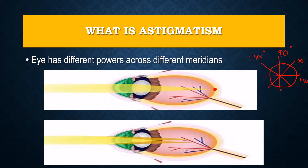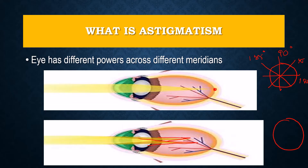However, in an astigmatic eye that is not the case. The meridians have different powers, and usually there will be two meridians 90 degrees apart, called the principal meridians. In an astigmatic eye we do not get a proper focal point on the retina. As you can see in this image, the vertical and horizontal meridians have different powers, so they focus at different positions — one behind, one in front of the retina, or both at different positions in front, depending on the type of astigmatism.